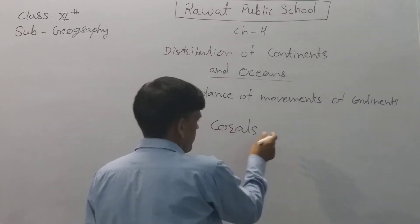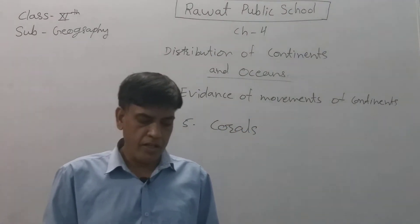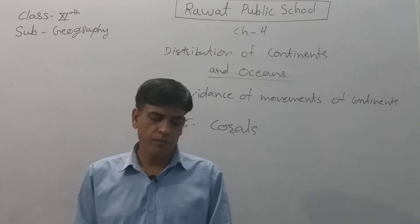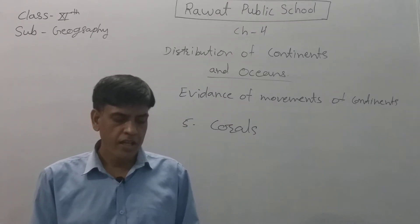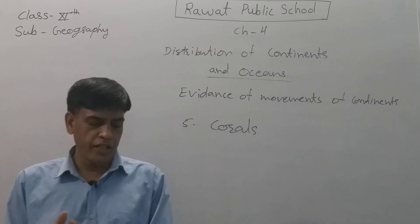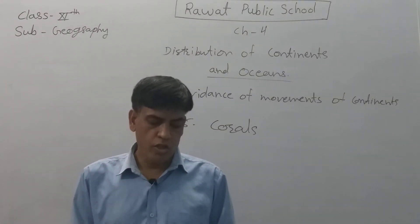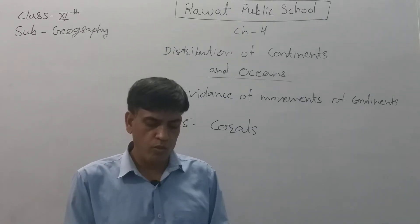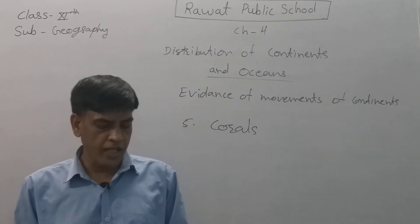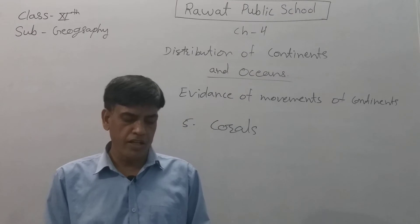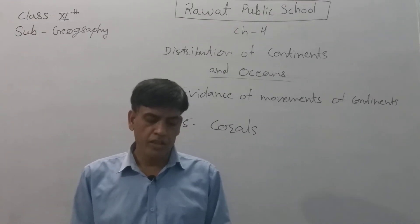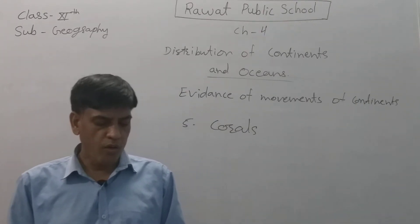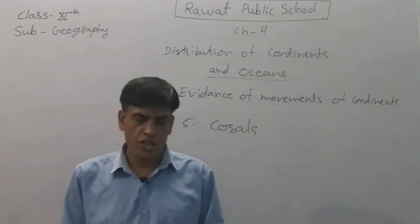The fifth evidence is the corals. Coral is a minute reef-building marine polyp which thrives well in warm waters with temperature about 20 degrees Celsius. It lives between latitude 30 degrees north and 30 degrees south. The geological occurrences of corals away from the belt of 30 degree north to 30 degree south latitude strengthens the view that these continents were nearer to the equator in the geological past. The continents have moved northward and are experiencing cold and torrid climate conditions today.